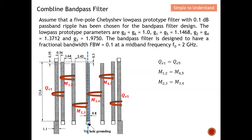The band pass filter is designed to have a fractional bandwidth of 0.1 at a mid-band frequency of 2 GHz. So at 2 GHz, which is the center of the band pass filter, we have a fractional bandwidth of 0.1.